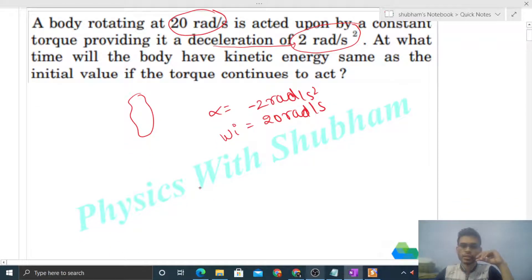We have to find at what time the kinetic energy will again be same. So initial kinetic energy is half of I into omega square. So initial omega is 20, so 20 square. Now you can see that because of this deceleration, omega continuously decreases.